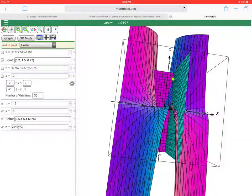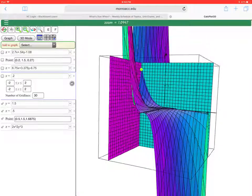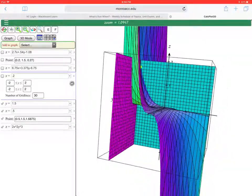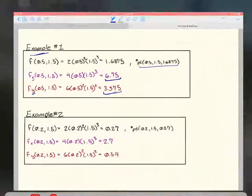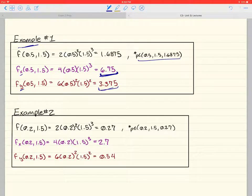And then if we take a look at this cyan surface over here, this is our y cubed. And that, at that point, the tangent plane is equal to 3.375.